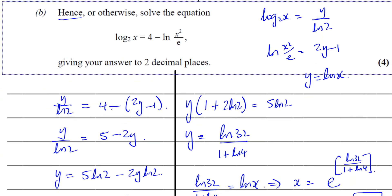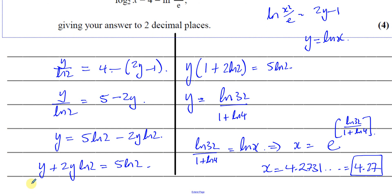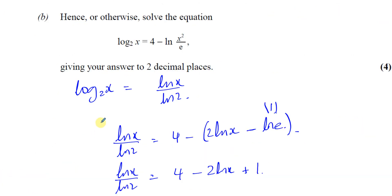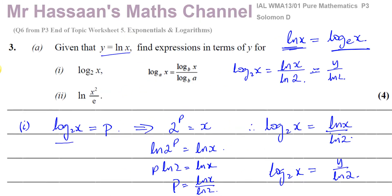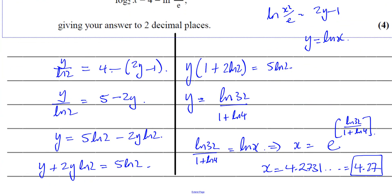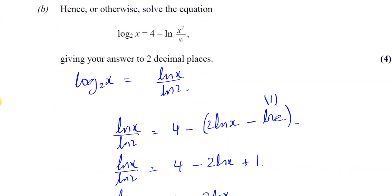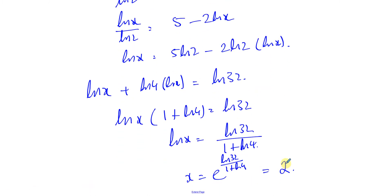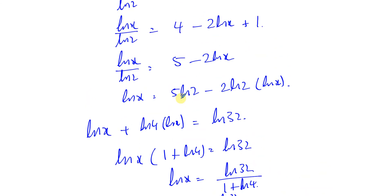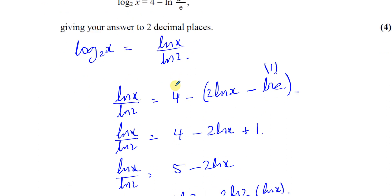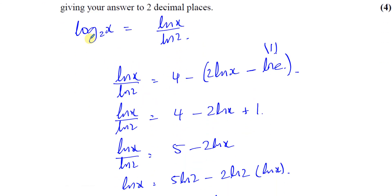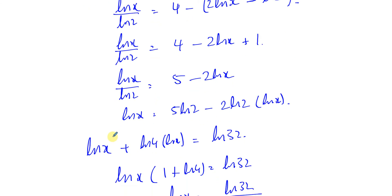As you can see, that's exactly what we got before: ln(32) over (1 plus ln(4)). We put that in the calculator and get the same answer, 4.27. So the answer is 4.27 to 2 decimal places. This is the 'otherwise' method — where you don't use what you did in part a, you simply change all terms to the same base and then solve the equation.